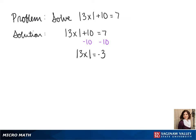The absolute value of something can't be a negative because absolute value is distance, and distance is always positive. So there's no set of numbers that will give us that negative 3, so we indicate that by saying a null set.